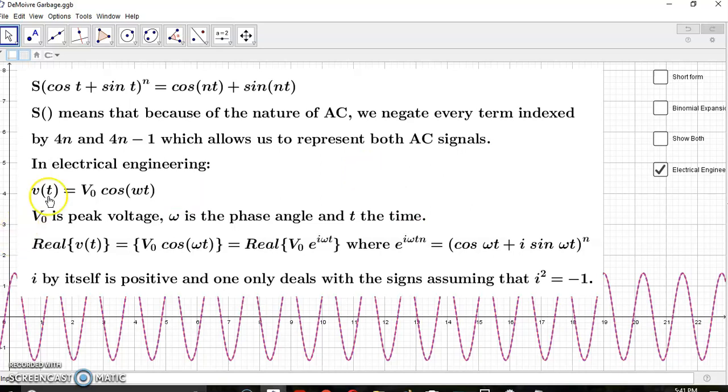So what are the signals that are being represented? Normally it's the impedance and the voltage. Those are the signals. In electrical engineering, the voltage at a given time is equal to the peak voltage, which is V sub zero times cos of omega t. And omega is the phase angle and t is the time.